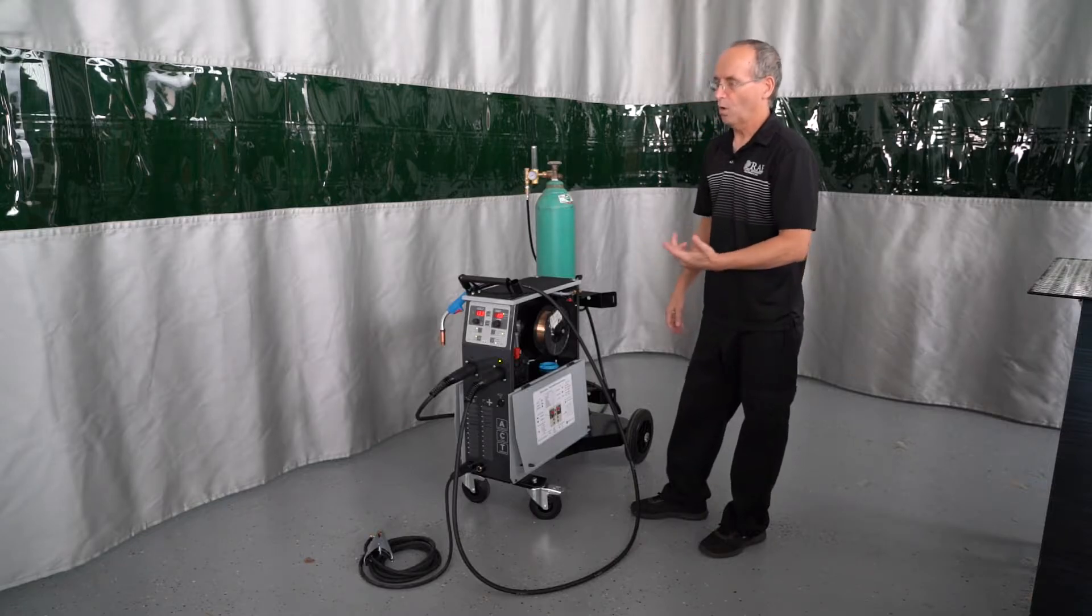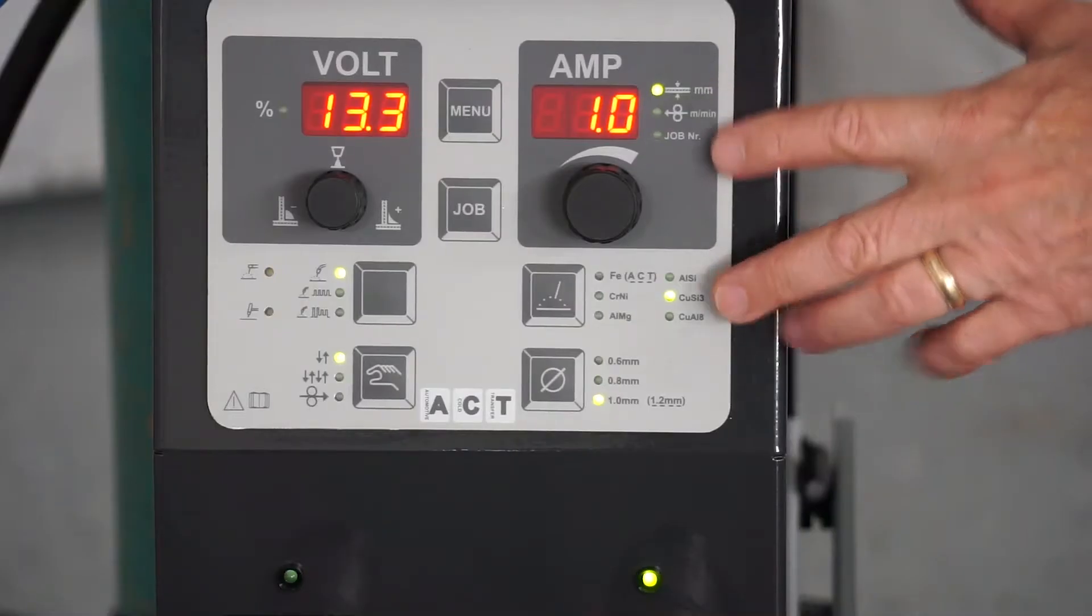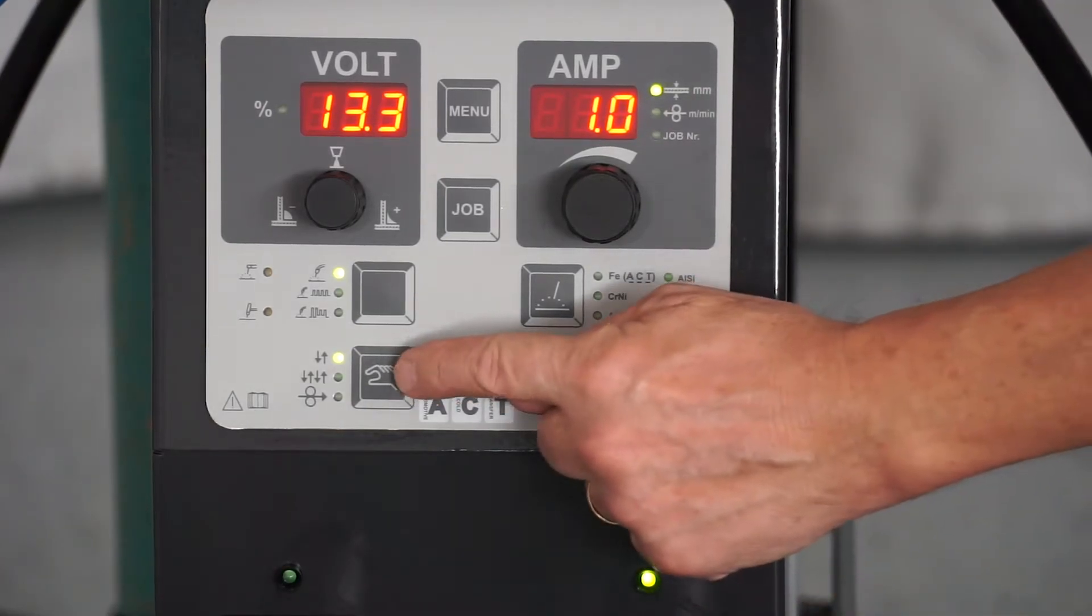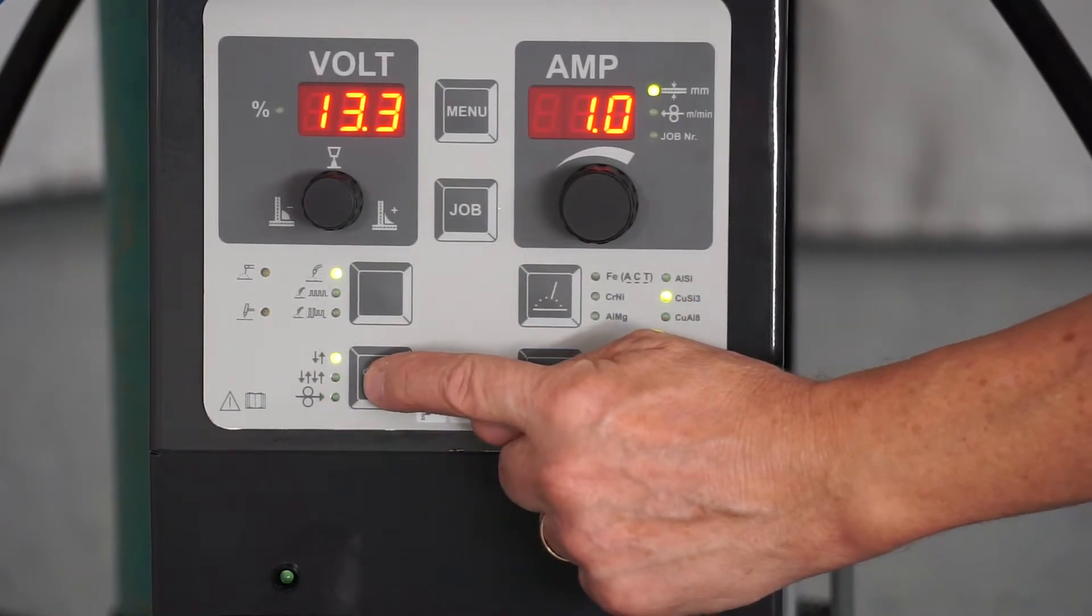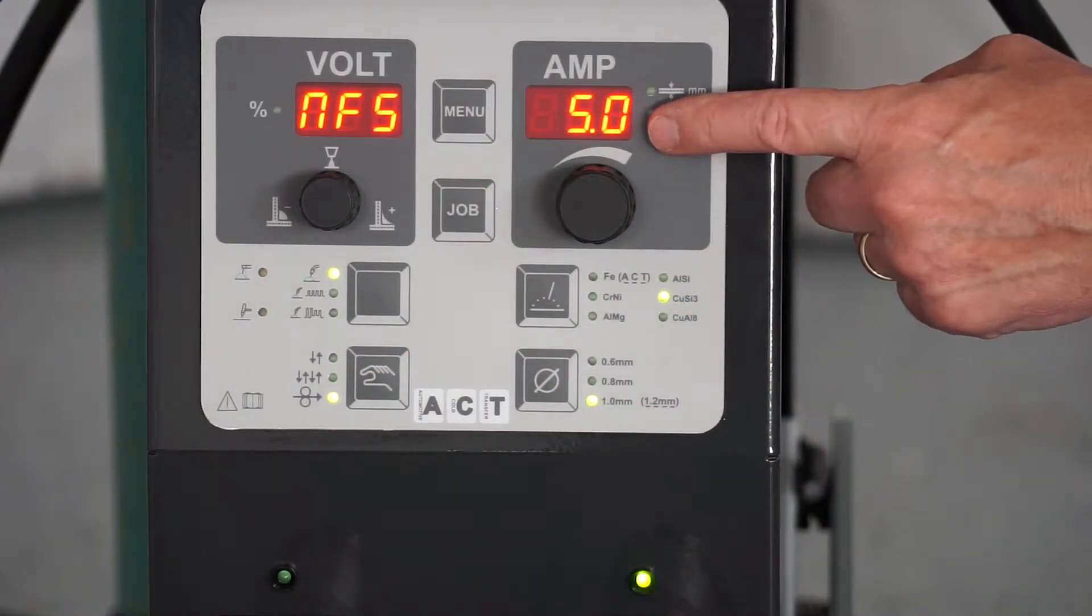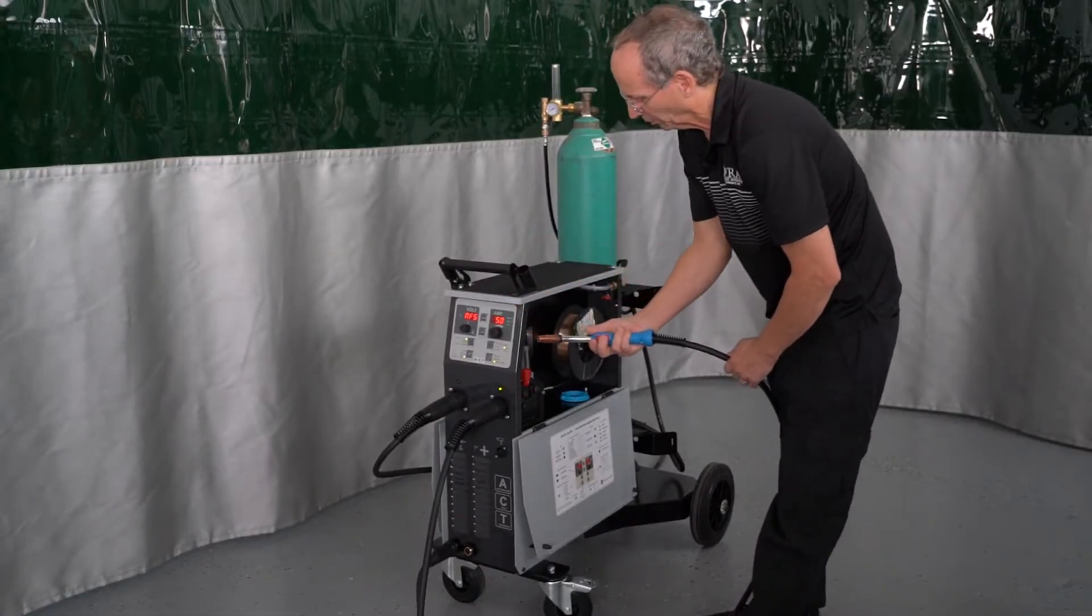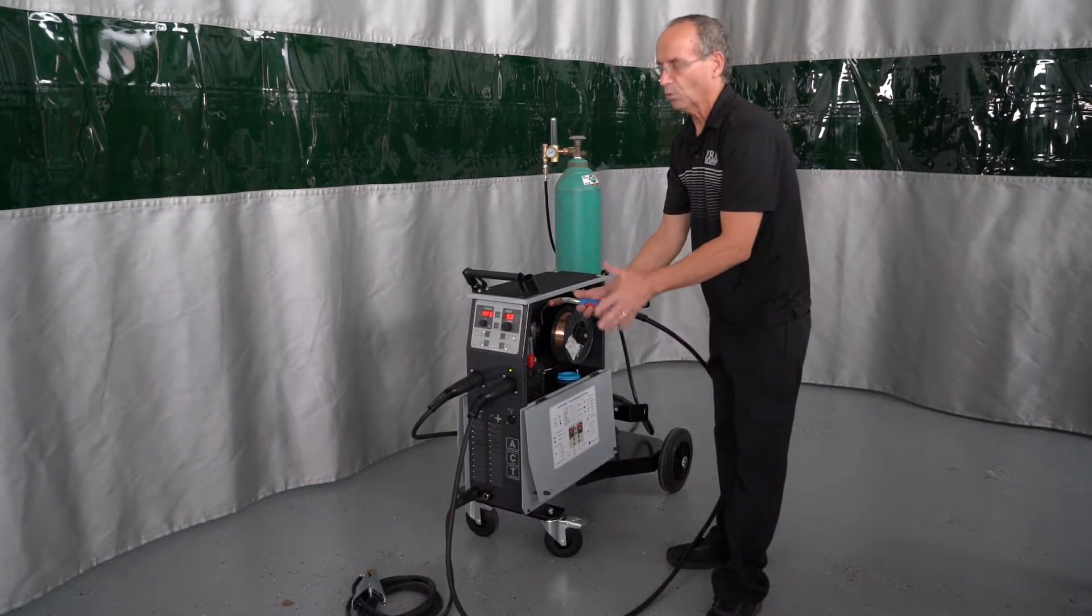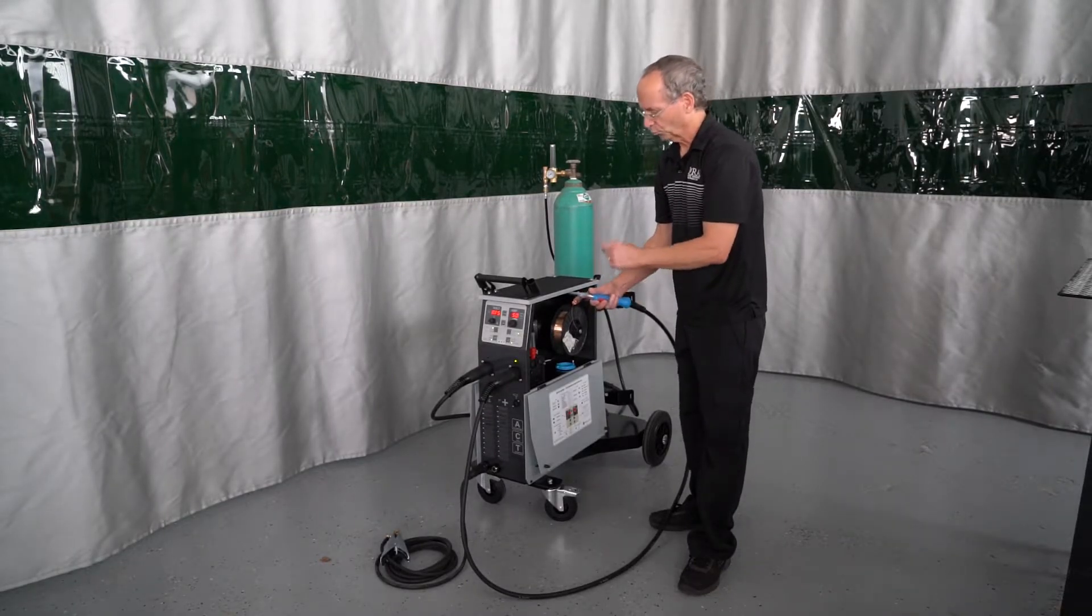Alright, now we're going to be loading wire onto the machine. On the front menu board here, we do have our gun activated for this side. We are going to go over to this part of the menu board where it shows the roller wheels and the wire coming through and just click down to that and the screen should say NFS 5.0. Now we can take the gun assembly and the wire is going to be rolling. There's no electricity rolling at this point. There's no gas coming out at this point and this is how we can load the wire to the machine.